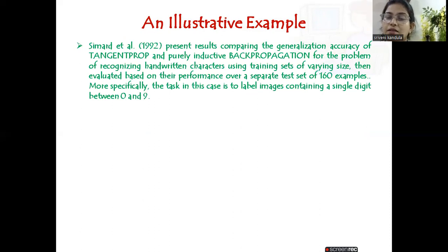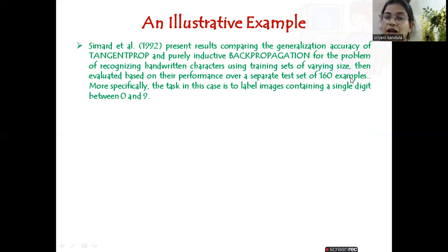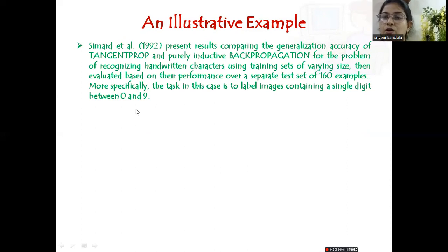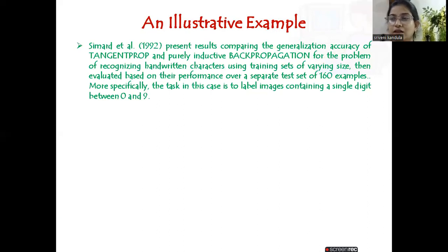Simard et al. presented results comparing back propagation with the Tangent Prop algorithm. They used a test set of 160 examples. They did not always use all 160 — sometimes they randomly picked subsets, evaluating performance with training sets of varying size. The task was recognizing handwritten digits ranging from 0 to 9, with numbers written by 160 different people collected as a dataset.